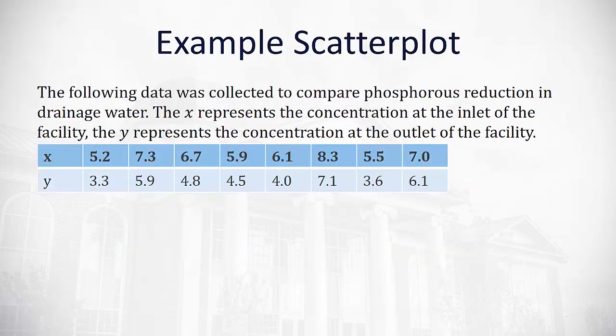So, for example, if data is collected to compare phosphorus reduction in drainage water, where x represents the concentration at the inlet of the facility and y represents the concentration at the outlet of the facility, we're attempting to see if there's a relationship between the inlet and the outlet. Does the in control the out?